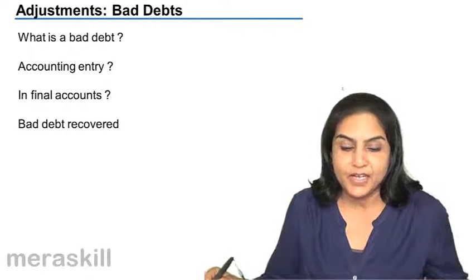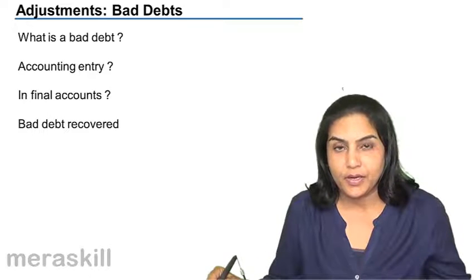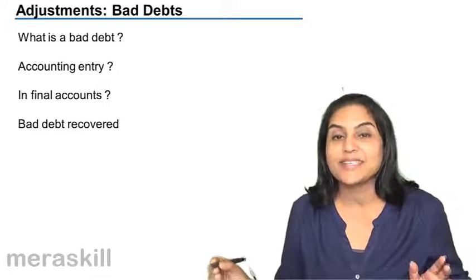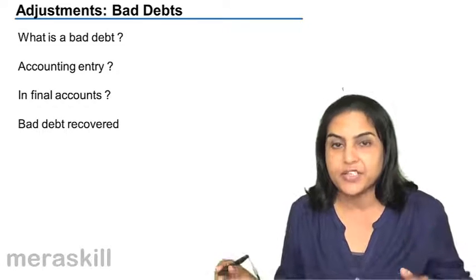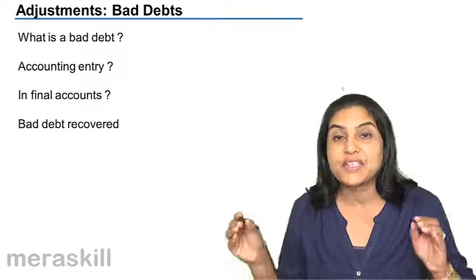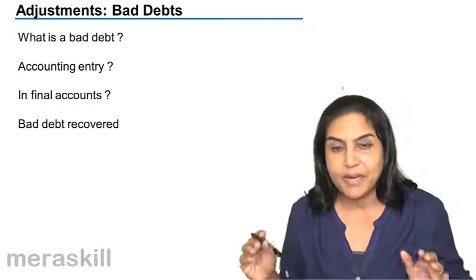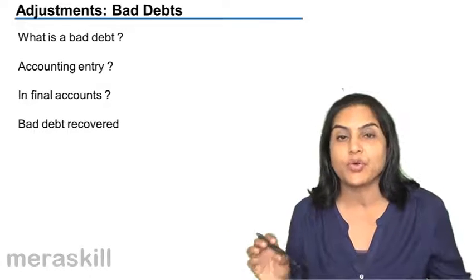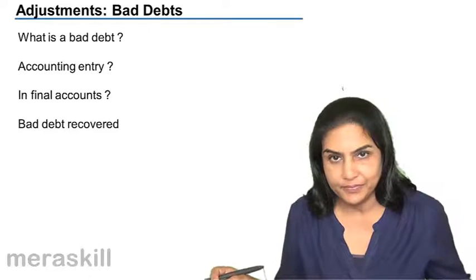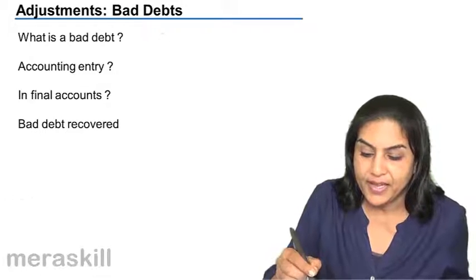Bad debts. What is a bad debt? When we have credit sales, the entry we pass is debtors to sales. So there is a debtor, that is a person from whom money is receivable. If this debtor does not pay the money, that money is lost — it becomes a loss. The amount which we know cannot be recovered from a debtor, we call it a bad debt. A bad debt is the irrecoverable amount.